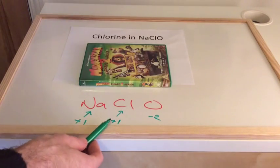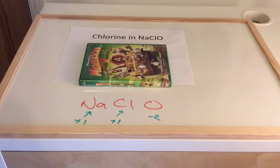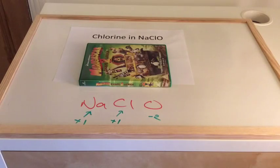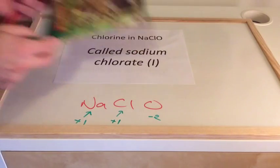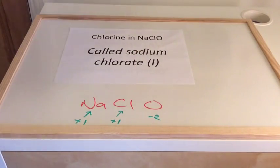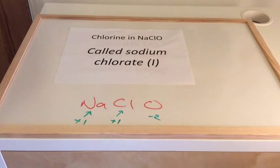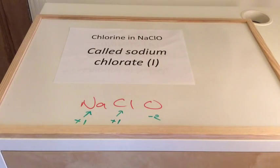Chlorine's oxidation number is plus 1 in this. And as a result, what do we call this? It's called sodium chlorate(I). That Roman numeral 1 in the bracket is the oxidation number for the chlorine.